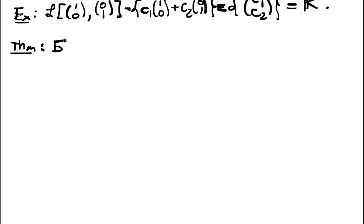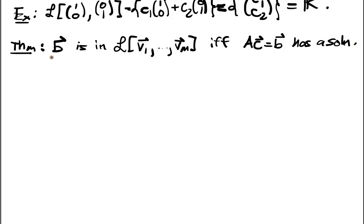So B is in L of V1 all the way up to Vm, if and only if AC is equal to B has a solution. It has at least one solution.